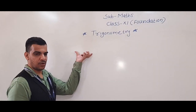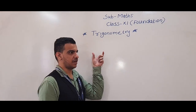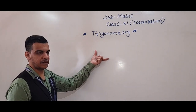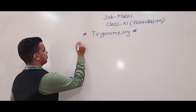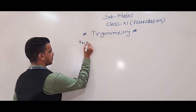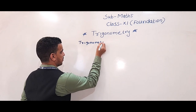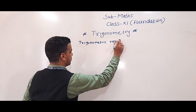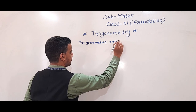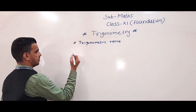Today we are going to learn trigonometric ratios, then trigonometric ratios in coordinates, and trigonometric identities. First, we know that there are 6 trigonometric ratios: sin theta, cos theta, tan theta, cot theta, cosec theta, and sec theta.